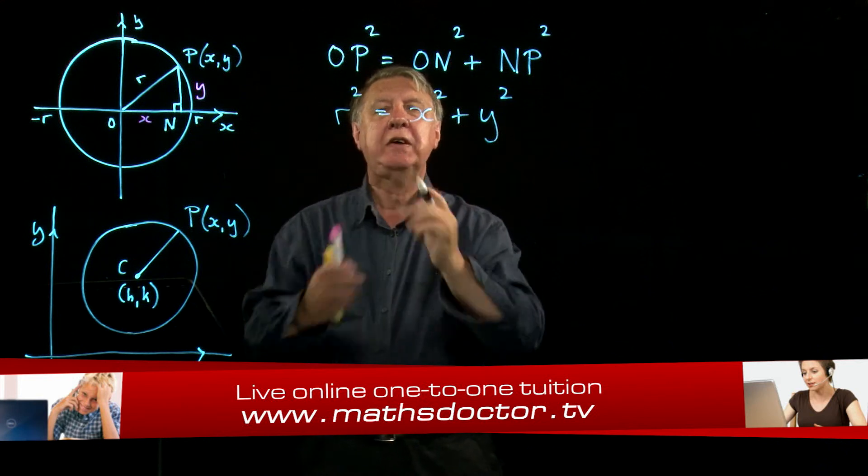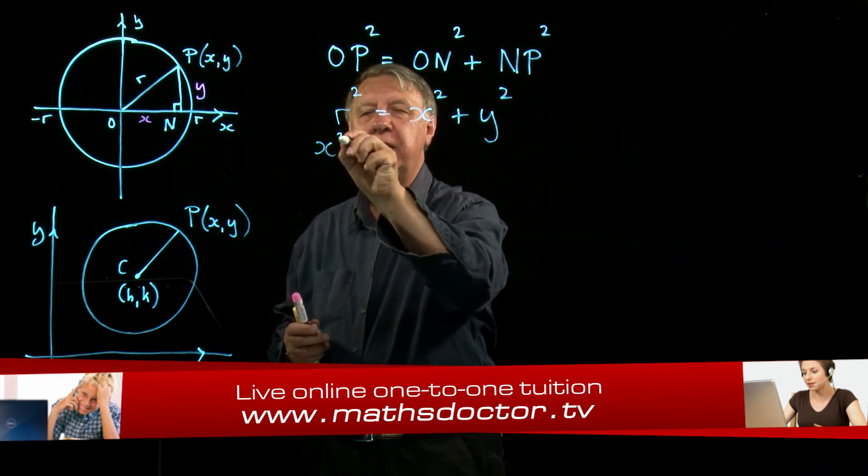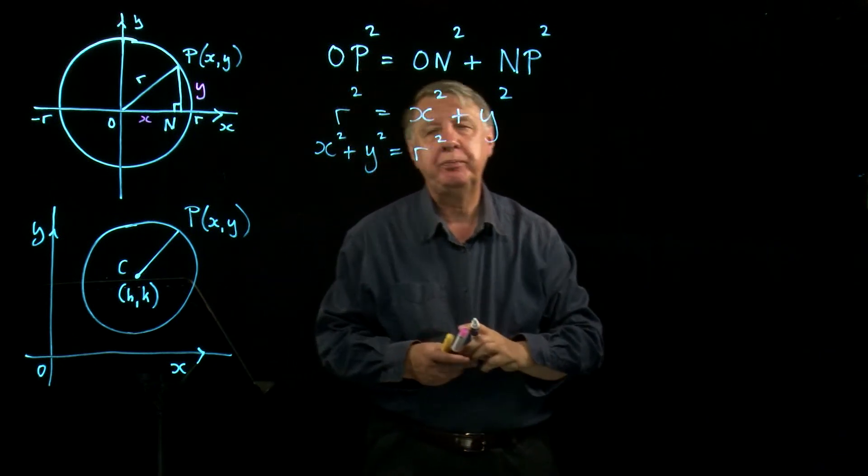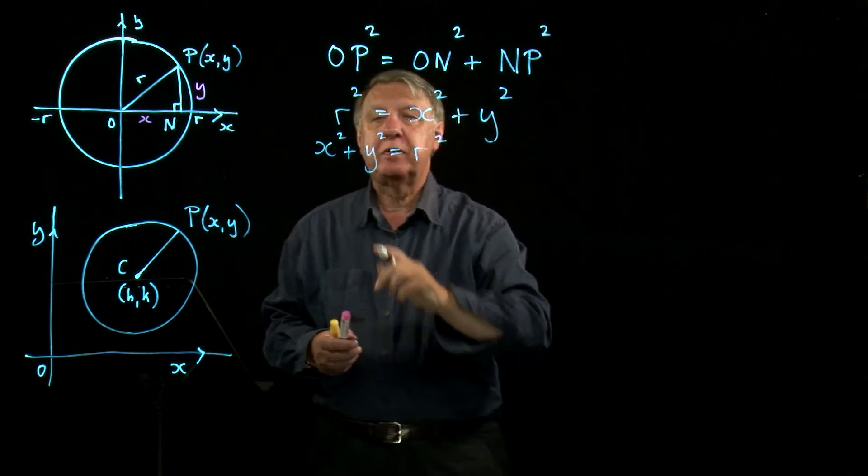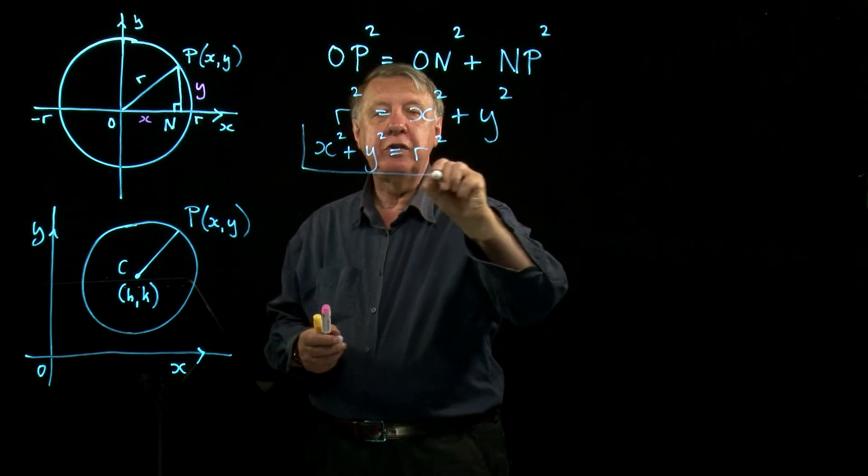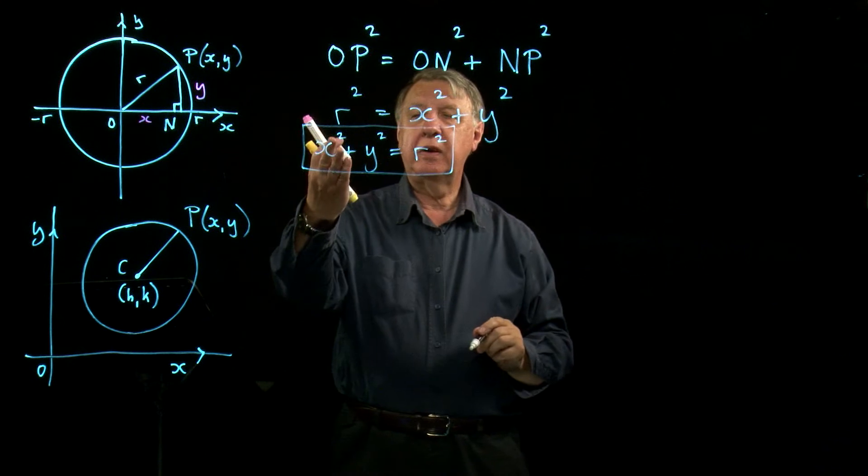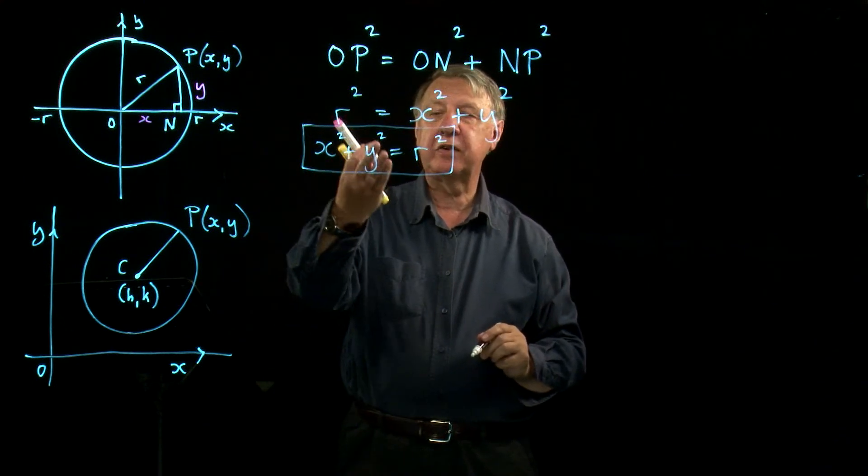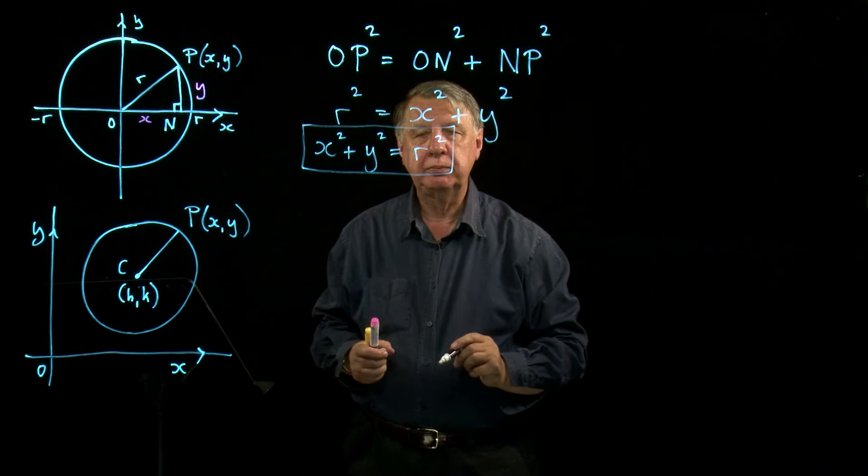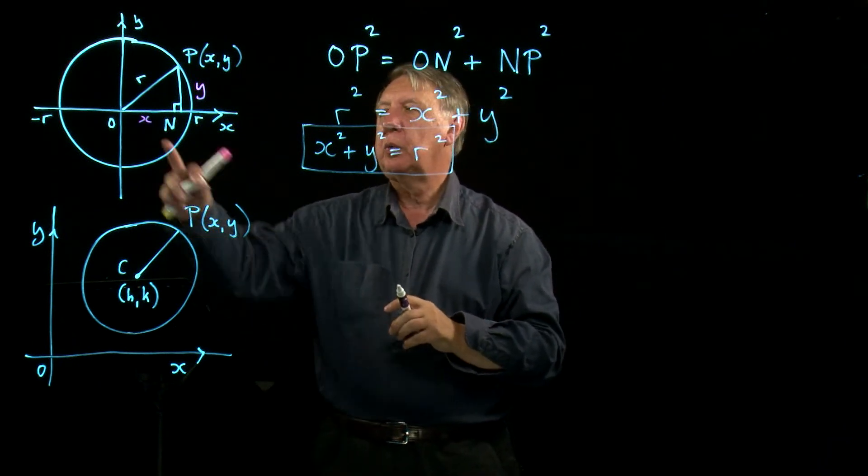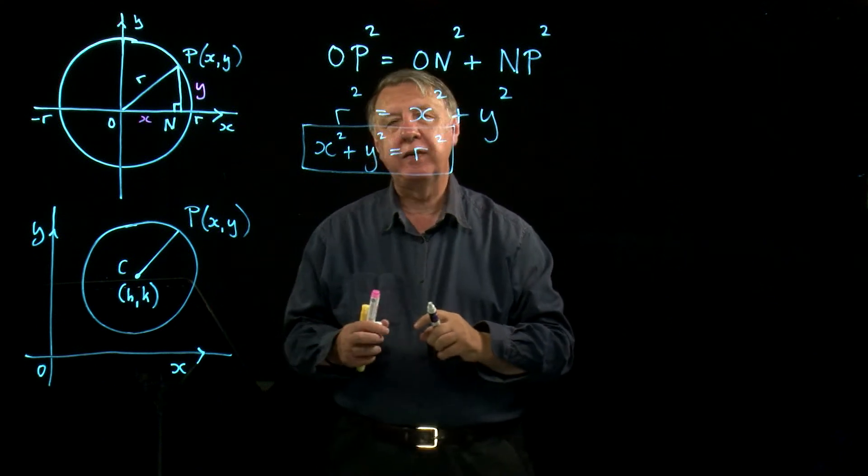Now we normally write that the other way around, so we normally write that X squared plus Y squared equals R squared. And this is the equation of the circle. It's a formula with X and Y in it that's always true. So that's the basic equation of a circle where the center is at the origin.